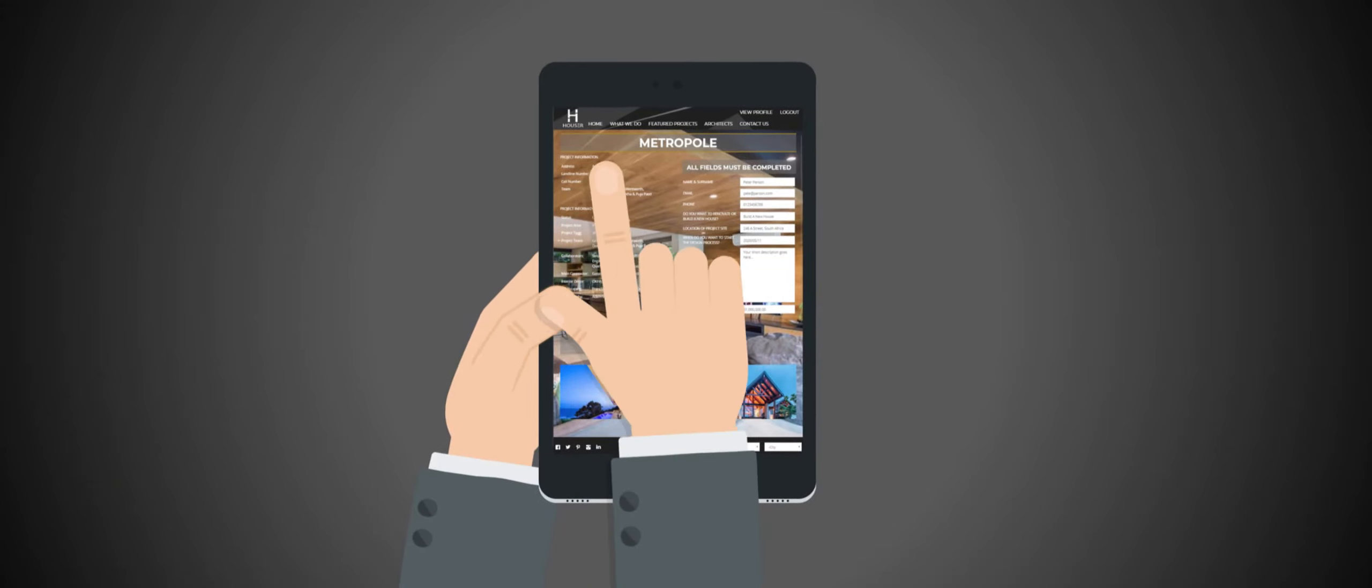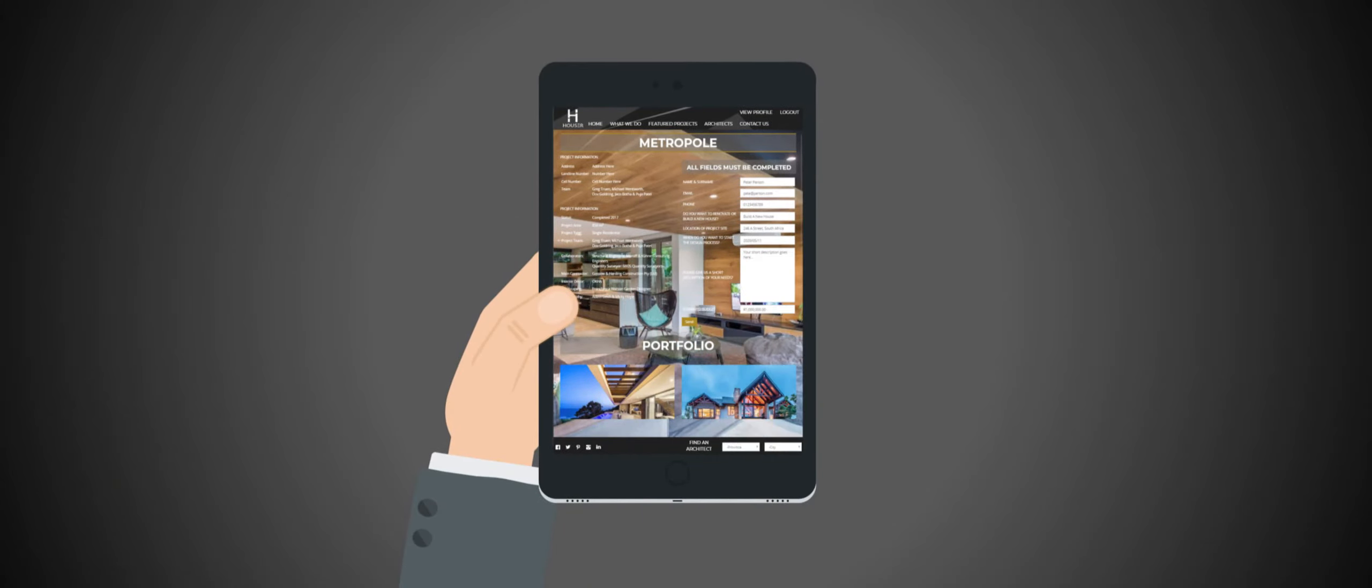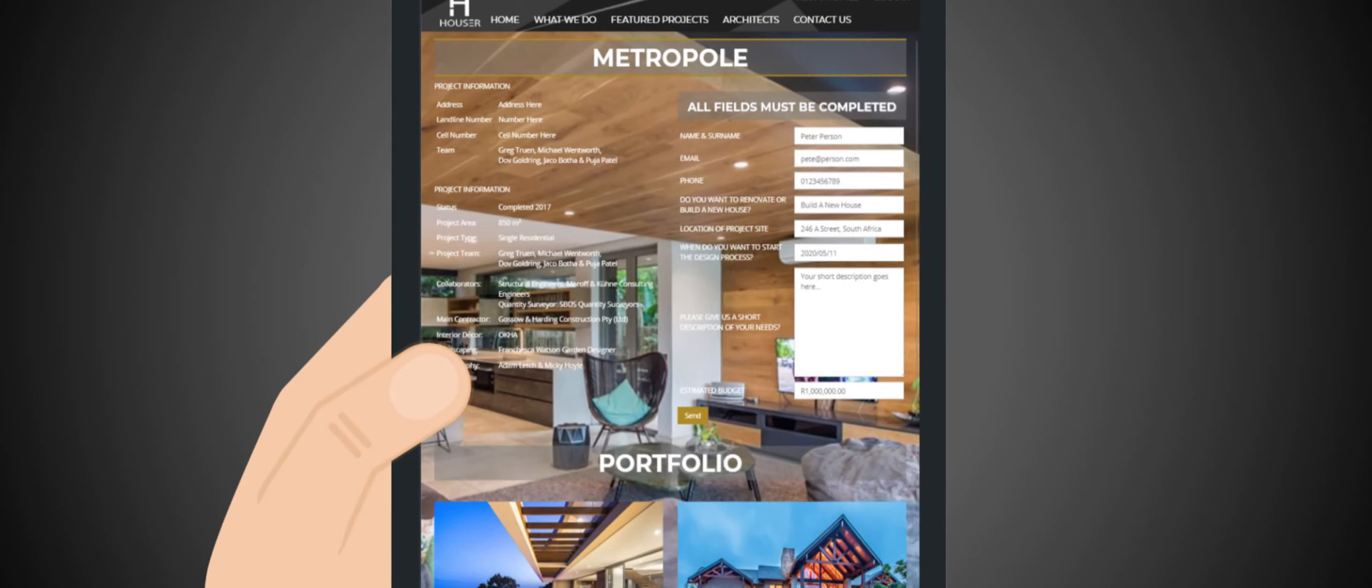You can then view the profiles of each of the architects in your area. On each of the architects' profiles you will find a quote request form on the right hand side of the page that has been loaded with the details you entered upon registration.